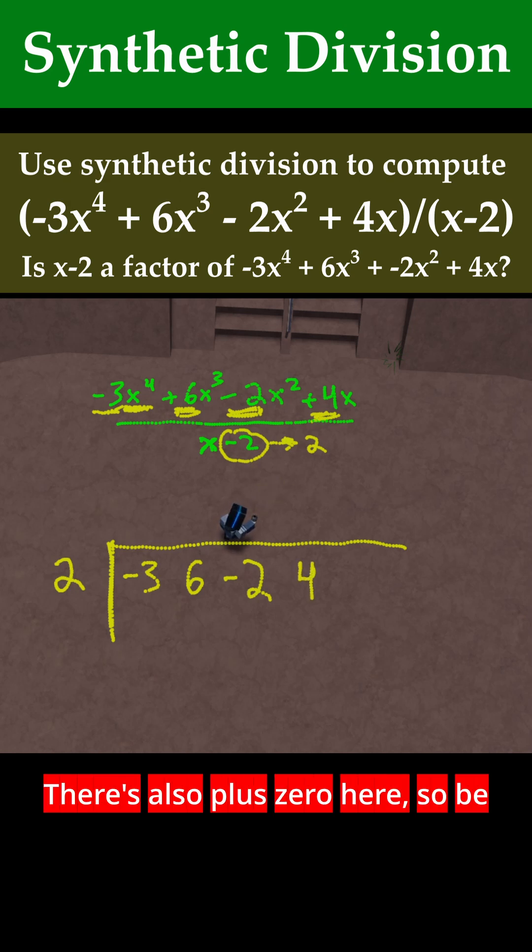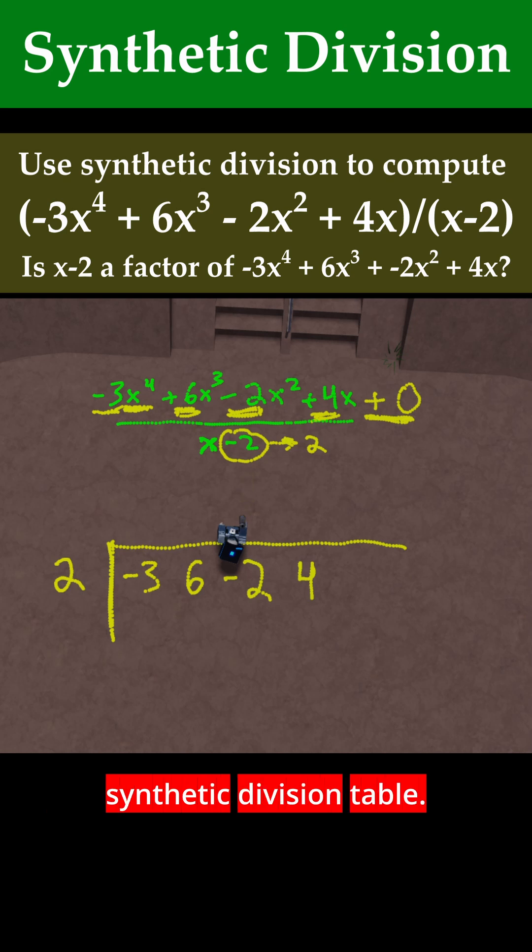And then be careful, we're not done yet. There's also a +0 here, so be very careful. Even the constant term needs to be added into the synthetic division table, so I'm going to have to add a 0 here. Now we're ready to proceed with synthetic division.